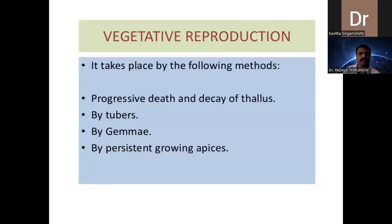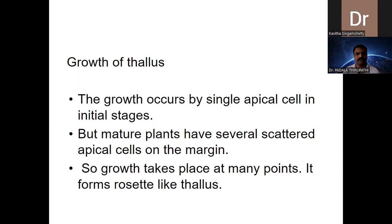The growth of the thallus occurs through a single apical cell. In mature plants, there are scattered apical cells on the margin considered as growth points. When the margin of the thallus detaches from the main plant, it has the capacity to develop into a new thallus — vegetative propagation. The anthoceros thallus lobes are arranged in several rings forming a rosette.